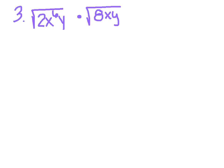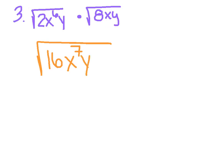Alright: the square root of 2x to the 6th times y, multiplied by the square root of 8xy. We've already multiplied radicals in class. Remember, you're going to multiply things outside together and things under the radical together. So I would multiply first before I attempt to clean it up. When I multiply these, I've got 2 times 8, which is 16. I've got x to the 6th times x — and remember, when you multiply, you add the exponents — giving x to the 7th. And I've got y times y, which of course is y squared.